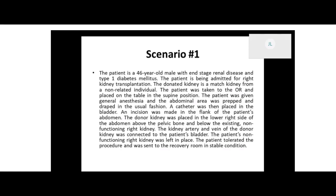The donated kidney is a matched kidney from a non-related individual. The patient was taken to the OR and placed on the table in the supine position, given general anesthesia, and the abdominal area was prepped and draped in the usual fashion. A catheter was placed in the bladder. An incision was made in the abdomen, and the donor kidney was placed in the lower right side of the abdomen, above the pelvic bone and below the existing non-functioning right kidney. The kidney artery and vein of the donor kidney were connected to the patient's bladder. The patient's non-functioning right kidney was left in place. The patient tolerated the procedure and was sent to the recovery room in stable condition.